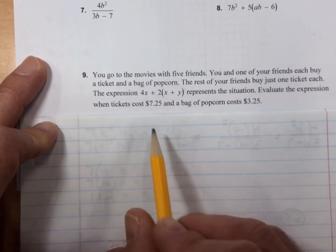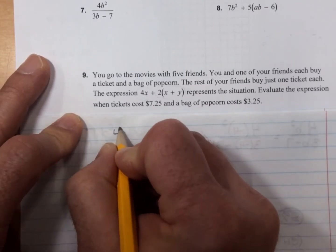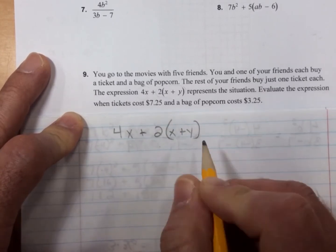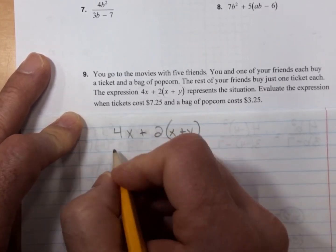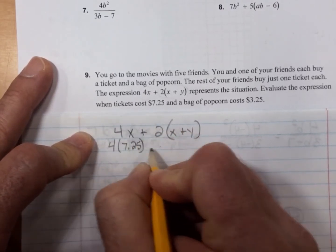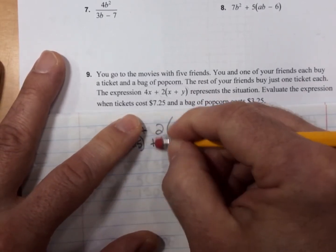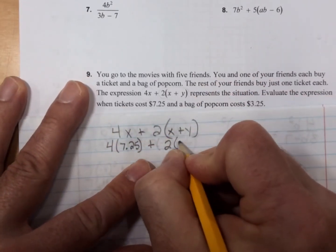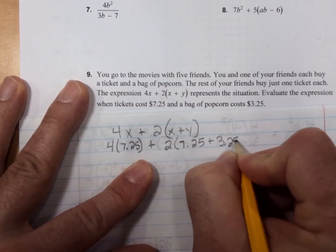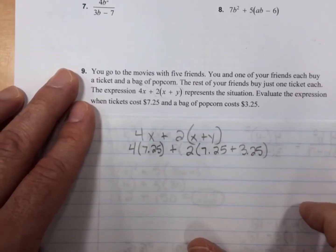Evaluate the expression when the tickets cost $7.25 and the bag of popcorn costs $3.25. So 4x + 2(x + y). The $7.25 is the ticket. So we have 4 times $7.25 plus 2 times ($7.25 + $3.25) for the popcorn.